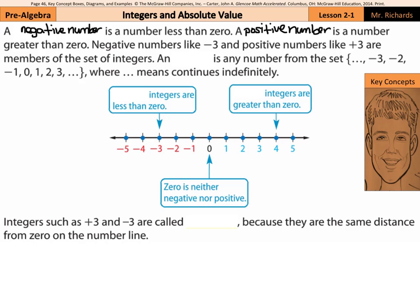An integer is any number from the set — all the way from all the negatives: negative three, negative two, negative one, zero, one, two, three, and so on, where dot dot dot means continues indefinitely. So, negative integers are less than zero and positive integers are greater than zero. Zero is neither negative nor positive.